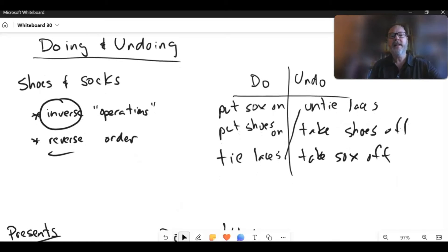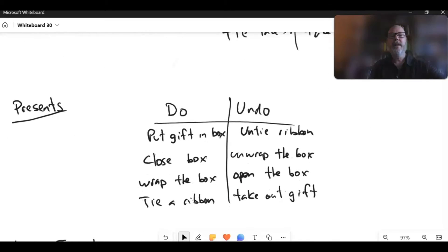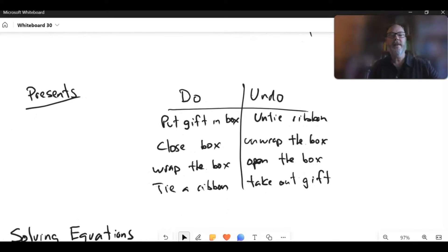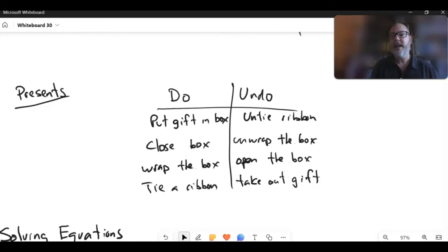If I need a second example, then I'll go for the present idea. And there's my doing list and undoing list. Depending on the cohort, I might get them to come up with these things, or I'll come up with the doing list and they'll tell me the undoing. So, inverse operations gets a mention, and reversing the order gets a mention.